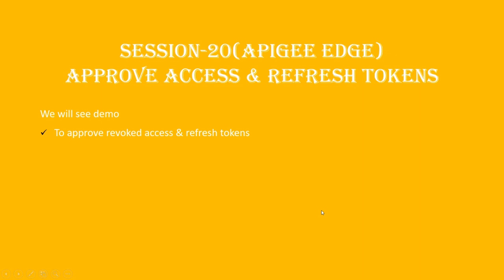This is session 20 of the Apache Apigee course for business. In this session we will see a demo to approve revoked access and refresh tokens. In our previous video session we discussed how to revoke access and refresh tokens. If you haven't watched that session, I would recommend you to watch it before proceeding with this video.